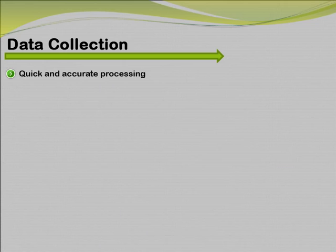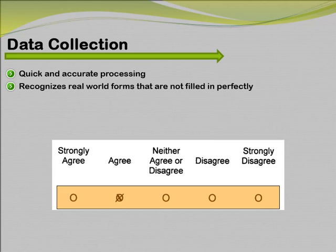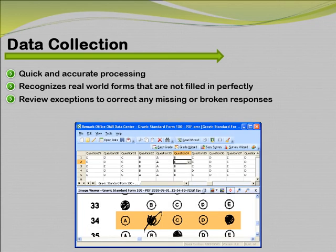Remark Office OMR provides quick and accurate data processing. It recognizes real-world forms that are not filled in perfectly. The ability to review exceptions once the data has been collected allows you to review and correct exceptions — such as missing or multiple responses — before exporting your data or running any analysis with Remark QuickStats. With version 8, you also have the ability to ignore large marks on your form. If your respondents cross out a selected answer, you can now ignore the mark that was used to cross out the answer.